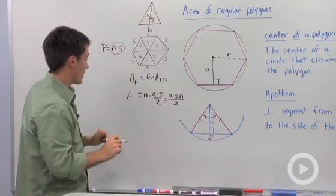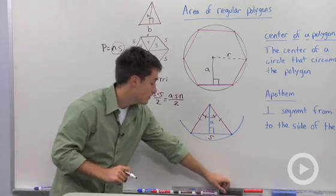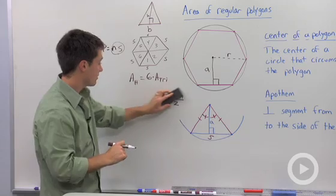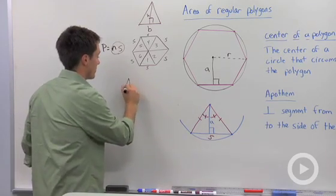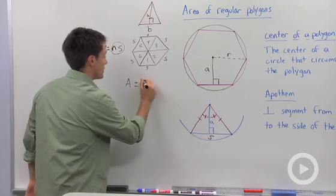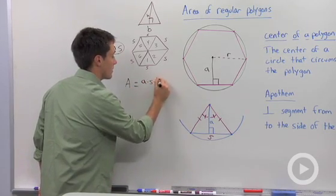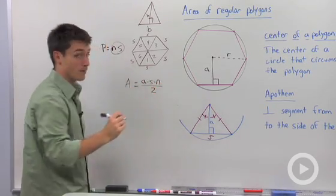So there's going to be two ways to write your area formula. So we're going to say the area of any regular polygon is equal to apothem times side length times the number of sides divided by two.